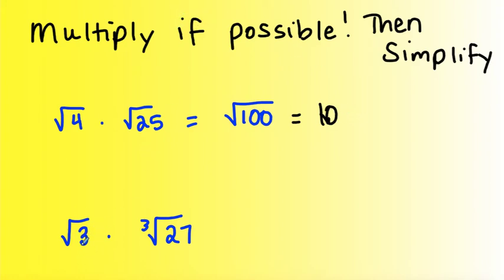Let's look at this next one. The square root of 3 times the cubed root of 27. The indexes are not the same, so you can't multiply.